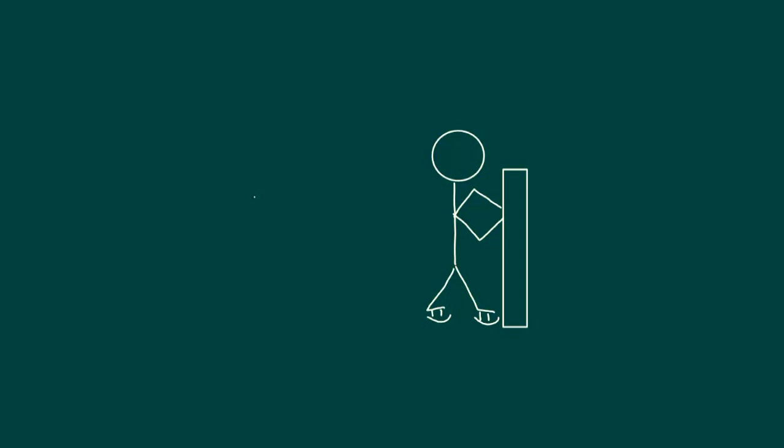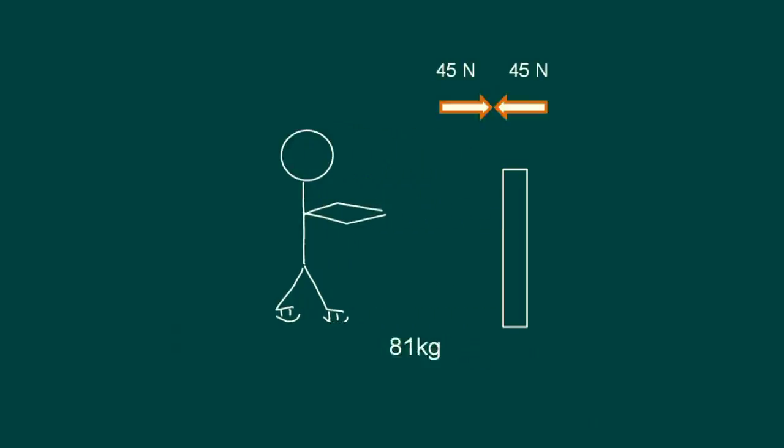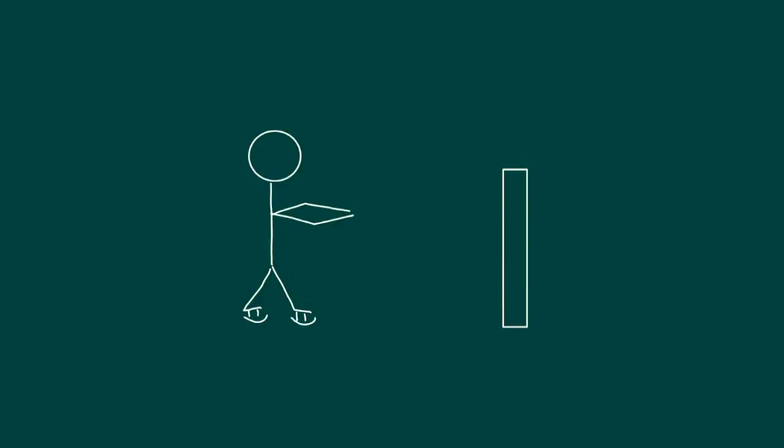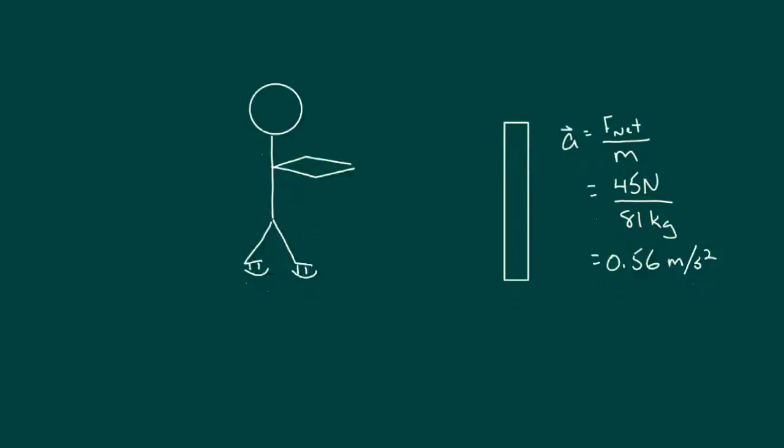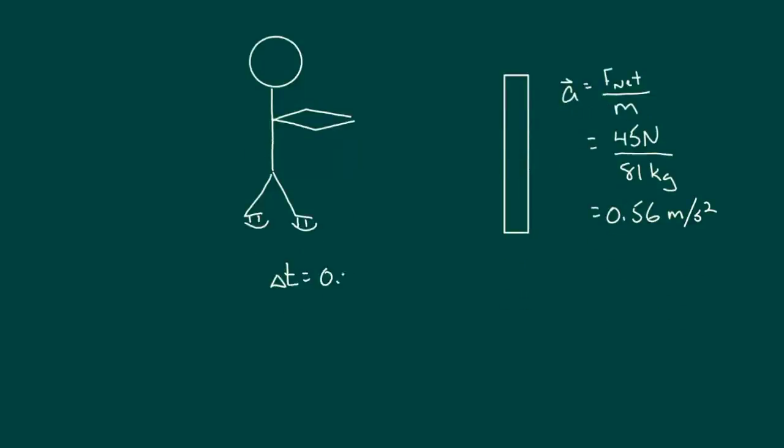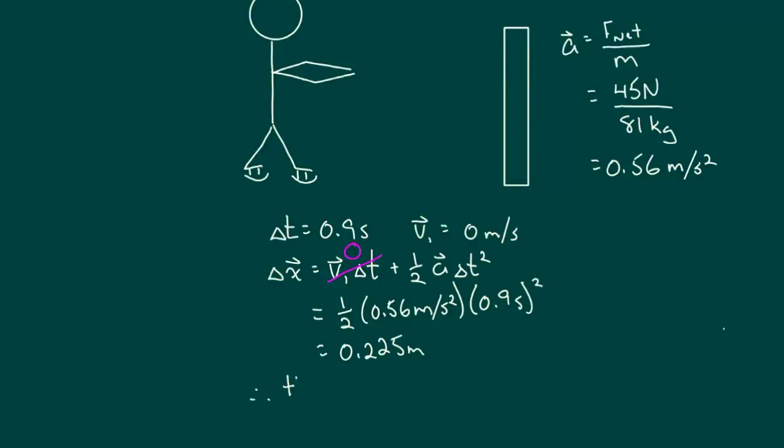Let's say we have an 81 kilogram hockey player pushing against the boards with a 45 Newton force, our action force. The boards push back with a force of the same magnitude, the reaction force. Then using the second law, we can determine the hockey player's acceleration, which is 0.56 meters per second squared. And we can even connect this with our kinematics. What if the duration of the push was 0.9 seconds and the player started at rest? We can determine how far he moved during the push using the second of the big five equations. Plugging in our values, we find that he moves about 22 centimeters during the push.